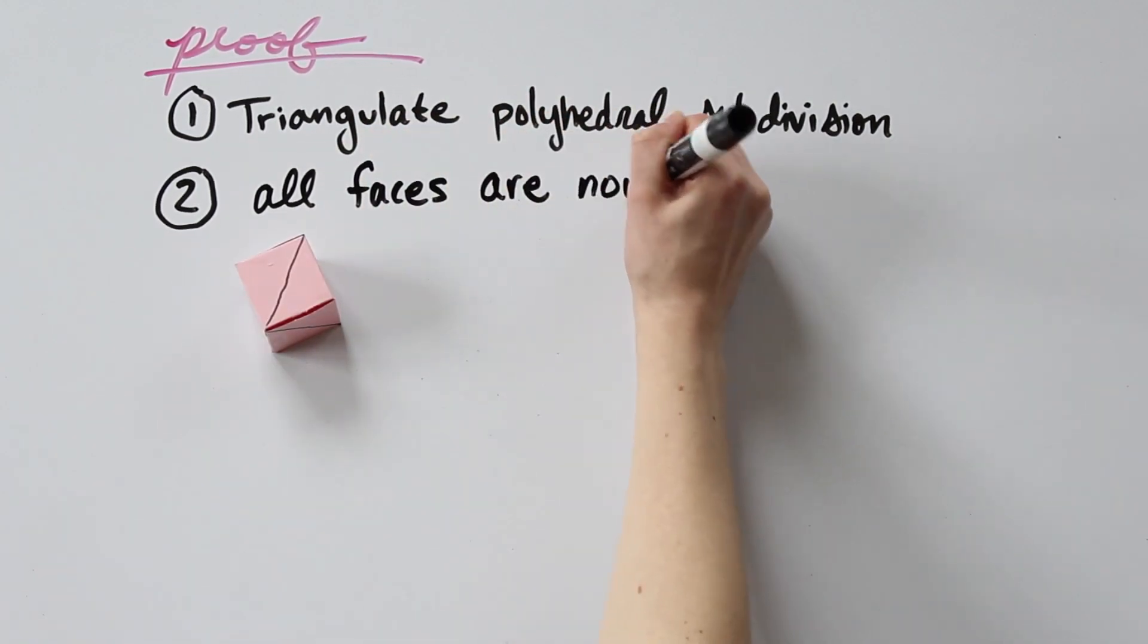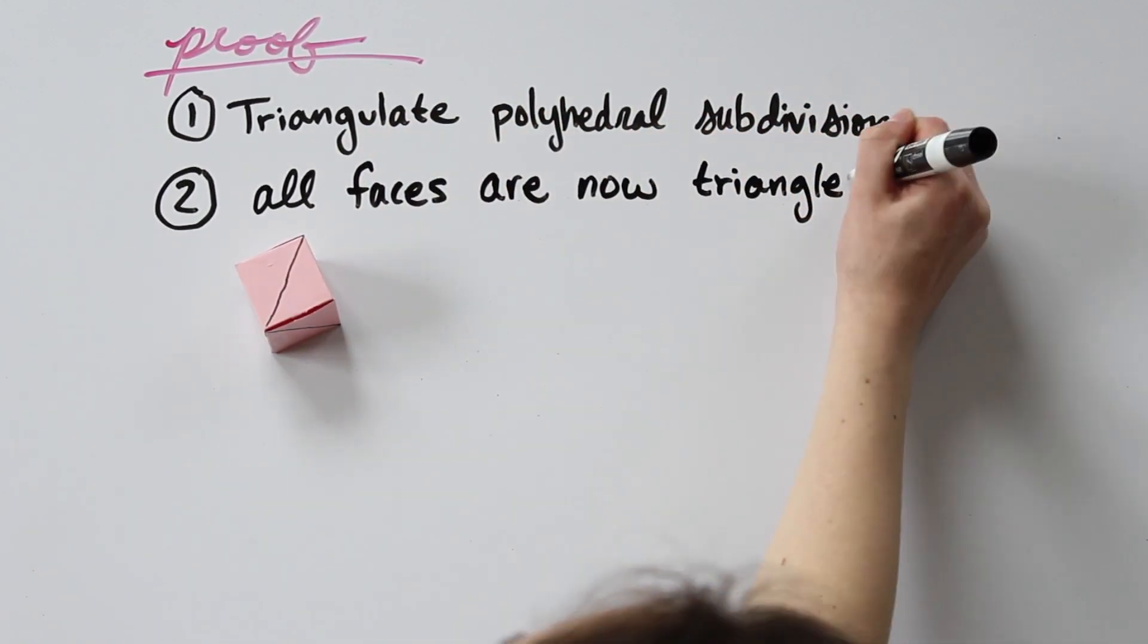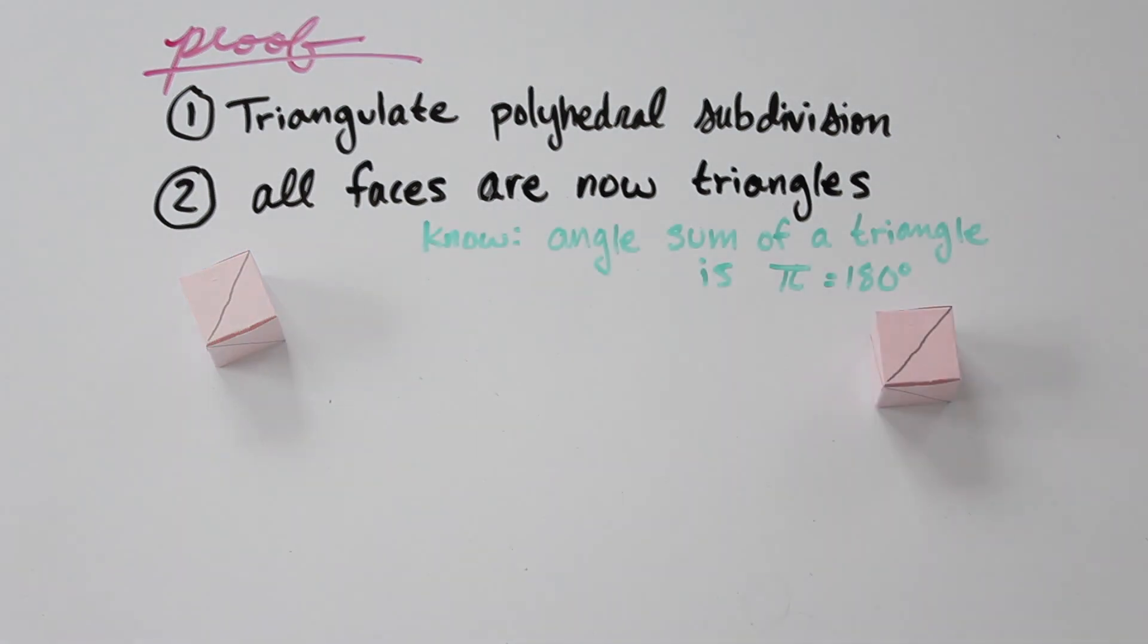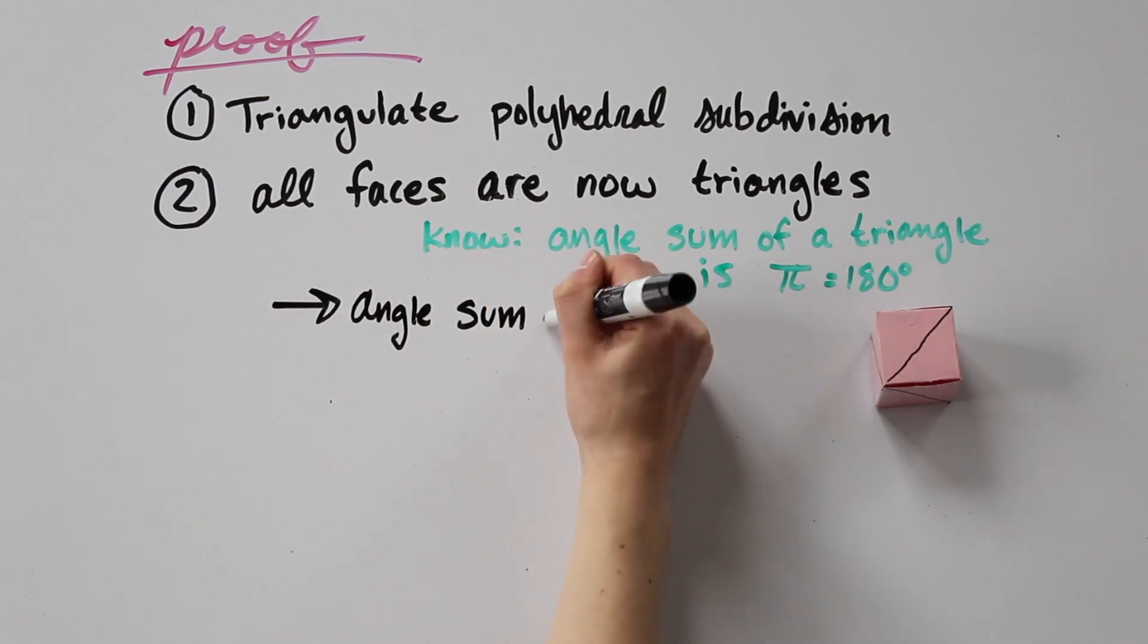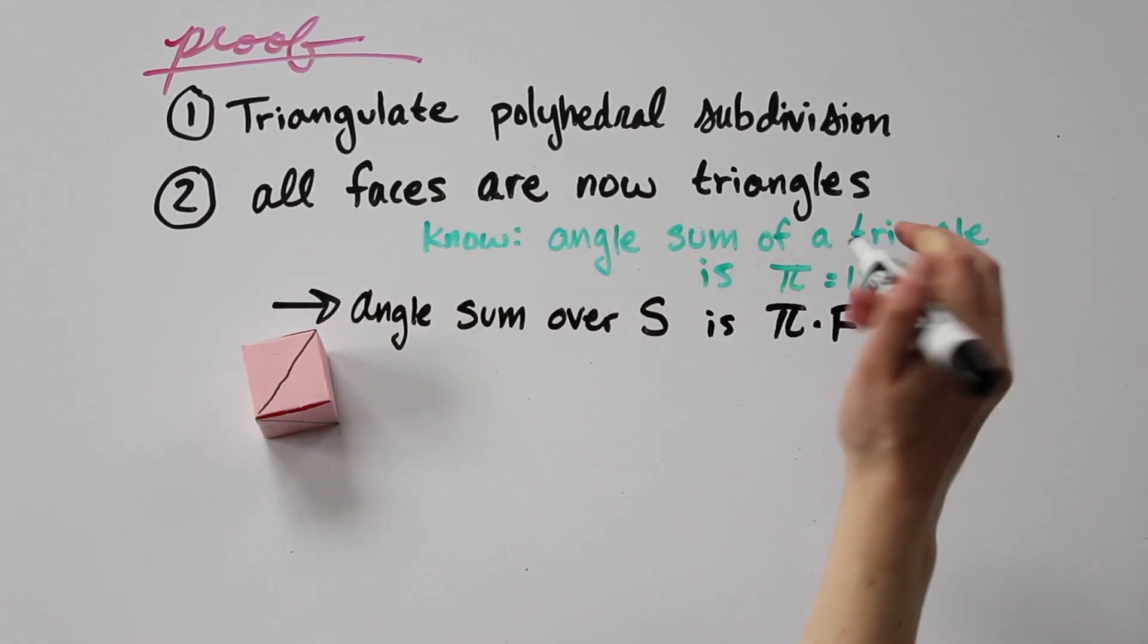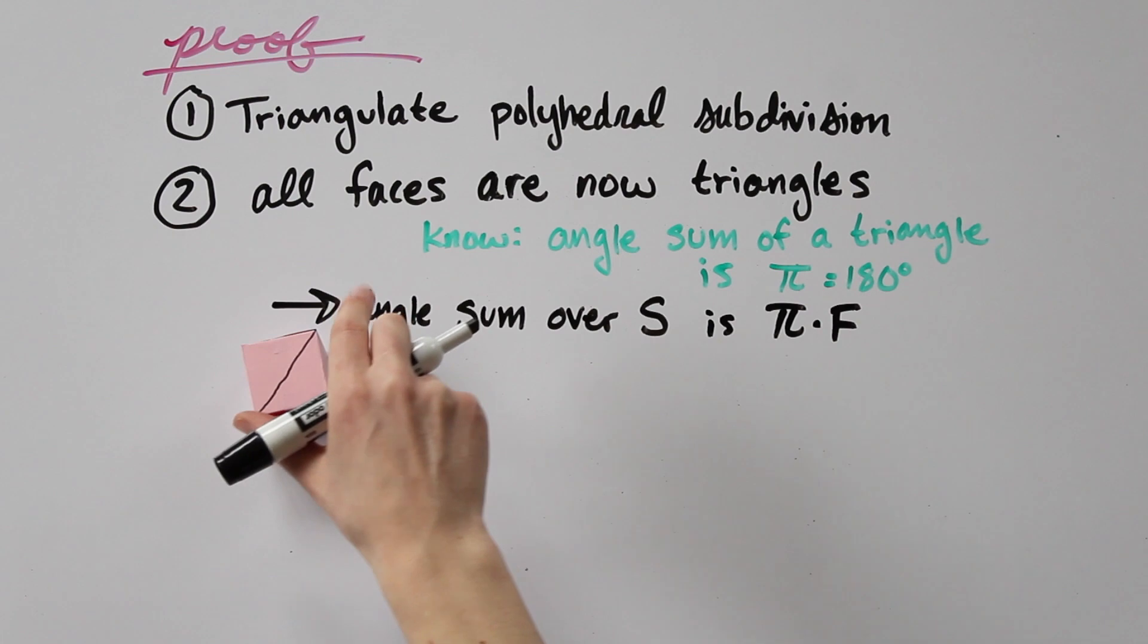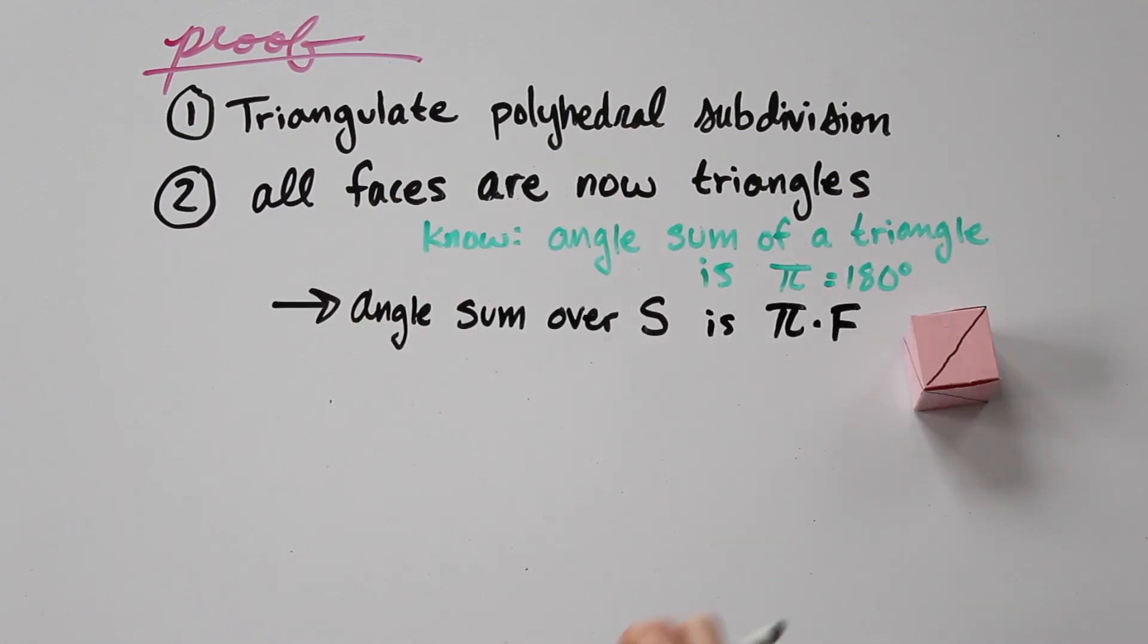For the second step, we know that all of the faces are now triangles, and that the interior angle sum of a triangle is π. So if we add up the interior angles of all of the faces of S, we should get π times F, the number of faces.